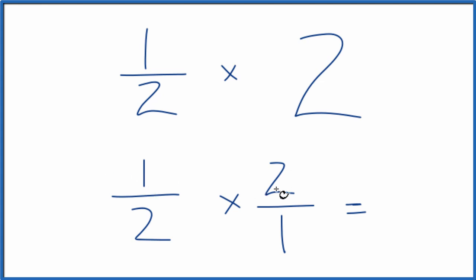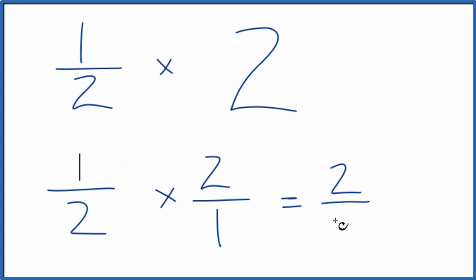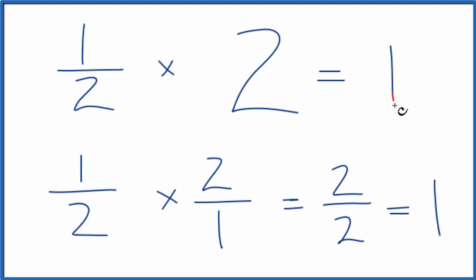we multiply the numerators. 1 times 2 is 2, and then we multiply the denominators. 2 times 1 is 2, and 2 over 2, that's just 1. So the fraction 1 half times 2, that equals 1.